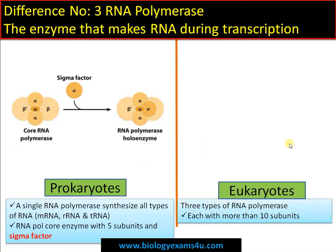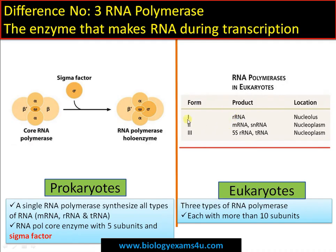In eukaryotes, there are three RNA polymerases with different functions. RNA polymerase I is involved in the synthesis of rRNA (except 5S rRNA) and is located in the nucleolus. RNA polymerase II synthesizes mRNA and snRNA and is located in the nucleoplasm. RNA polymerase III synthesizes tRNA and 5S rRNA, also in the nucleoplasm. Each RNA polymerase is complex, with more than 10 subunits.